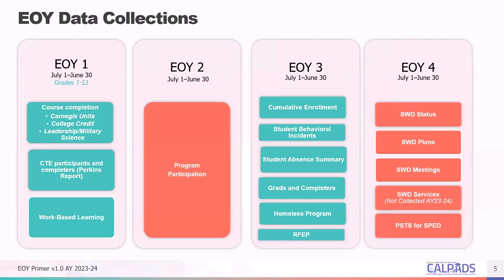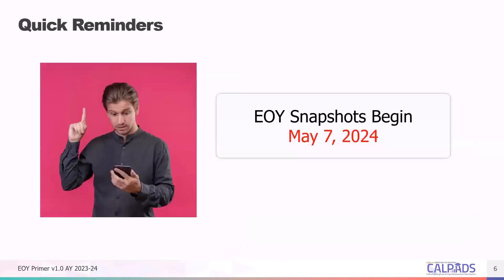Please note that the student enrollment or SENR file and student information or SINF files must be up-to-date in CALPADS before uploading any of the EOY files. The end-of-year data collections begin on May 7th this academic year. This is when snapshot reports, CDDs, and CERT errors will become available.